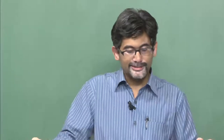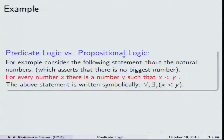For example, 'for every number X there is a number Y such that X is less than Y' is represented symbolically as: for all X, there exists some Y such that X is less than Y. But this alone is not sufficient to determine truth — we need a domain. Are we talking about natural numbers, integers, rational numbers? All these things need to be stated explicitly so that we can talk about the truth of this sentence. Predicates will usually take care of these relationships.